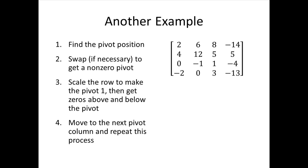Let's look at an example where we get our matrix into reduced echelon form. Step one is to find the pivot position — that's at the top of the first non-zero column. Since the entry there is two (not zero), we don't need to do any swapping. We skip ahead to step three and scale that row to make the pivot one, dividing the row by two, or equivalently multiplying by one-half. Here's the result of multiplying by one-half.